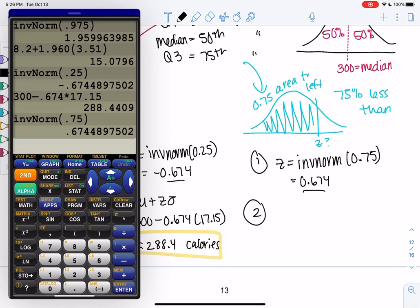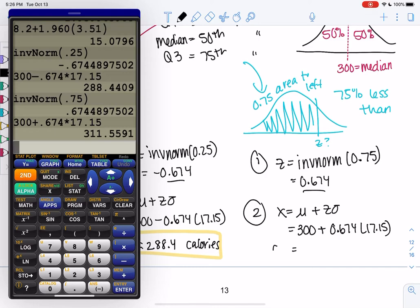And then we'll de-standardize. So x is mu plus z sigma. So in this case, we'll do 300, and then we'll do plus 0.674 because it's a positive z-score, times 17.15. And this will tell me Q3. And we get 311.6 for Q3. And again, it's calories. And that's how you find them.